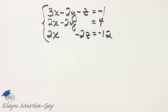Let's solve this system of three equations and three unknowns. Choose two equations and eliminate a variable, and then choose any other two equations, and the key here is eliminate the same variable.